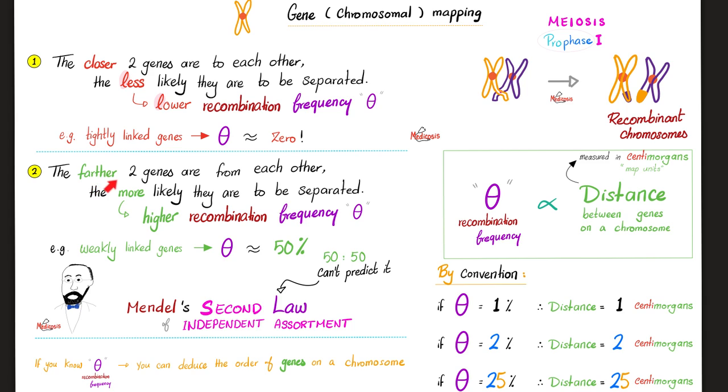Conversely, the farther apart the two genes are from each other, the more likely that they will be separated during meiosis, which means higher chance of recombination, which means higher recombination frequency, theta.